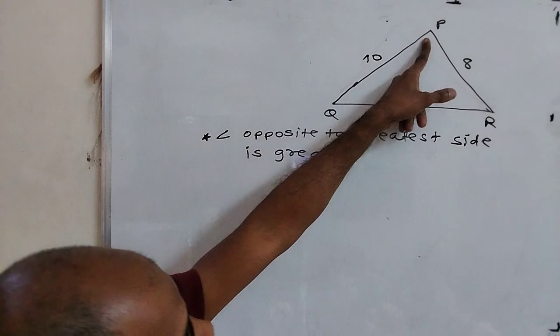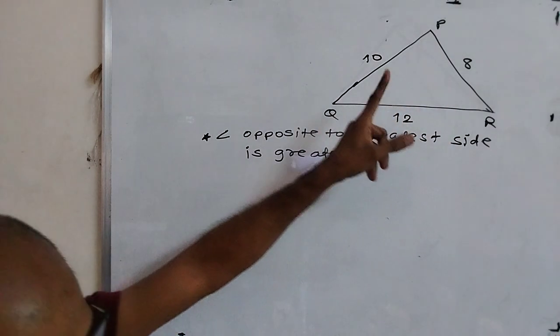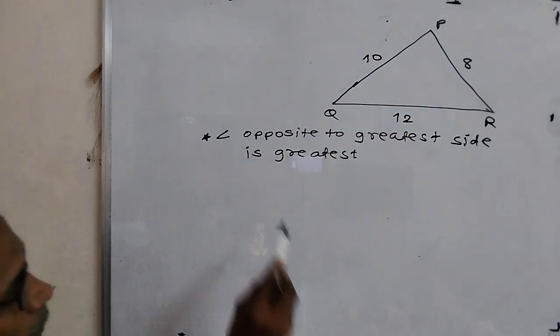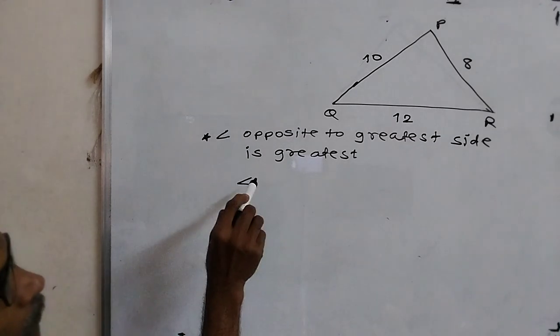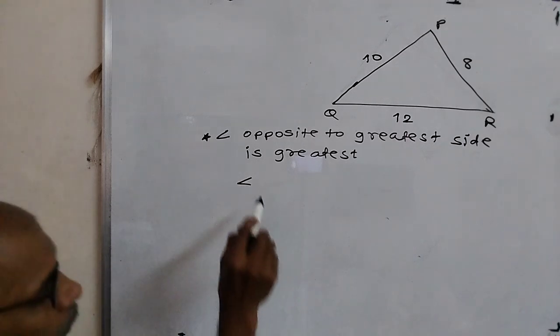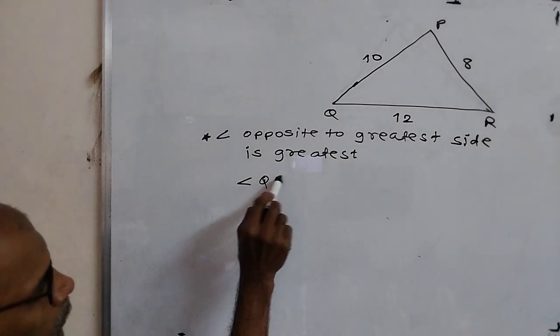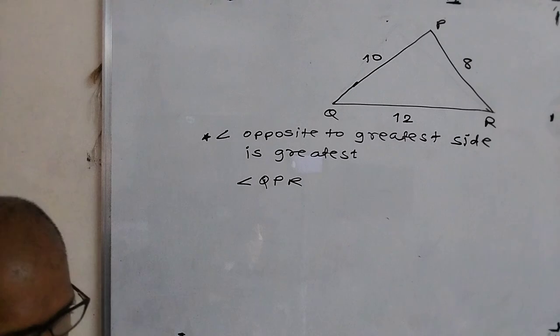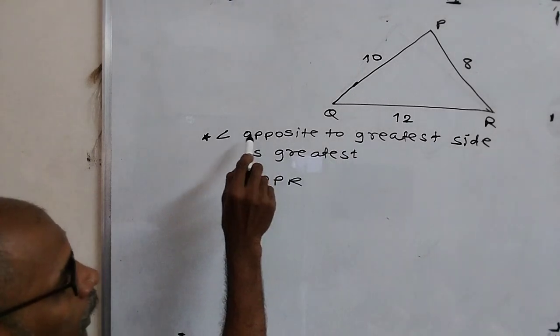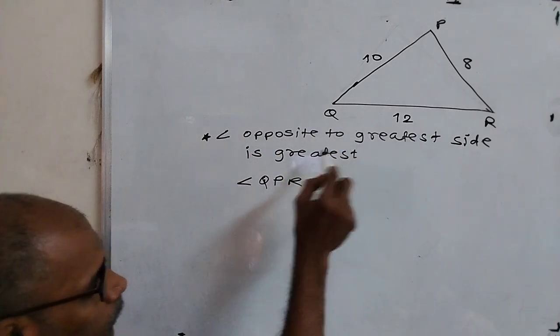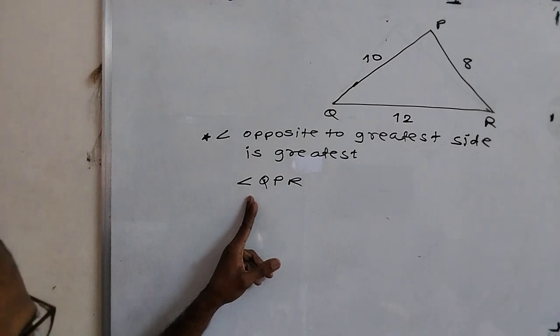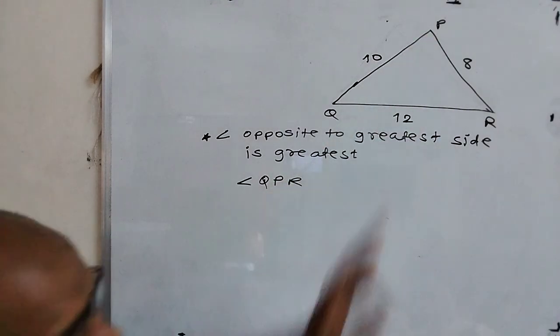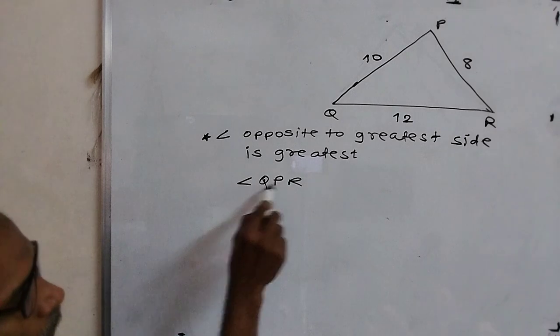Then angle opposite to greatest side is greatest. Which is greatest angle? Angle QPR. These are very dull students, they don't know name of angle. Angle opposite to greatest side, this is greatest side. We want angle opposite to greatest side is P, means angle QPR.